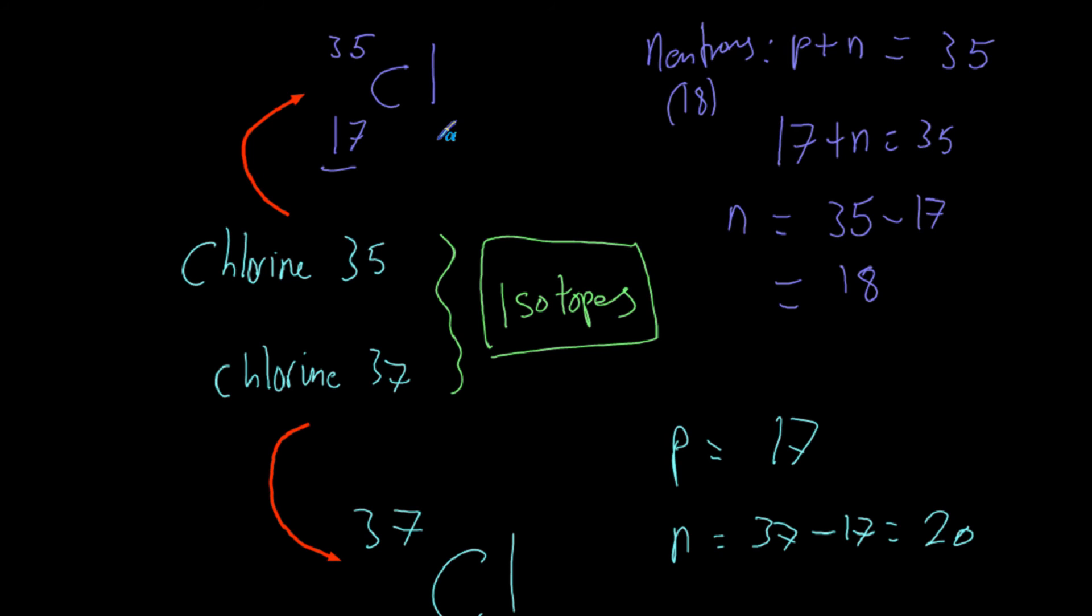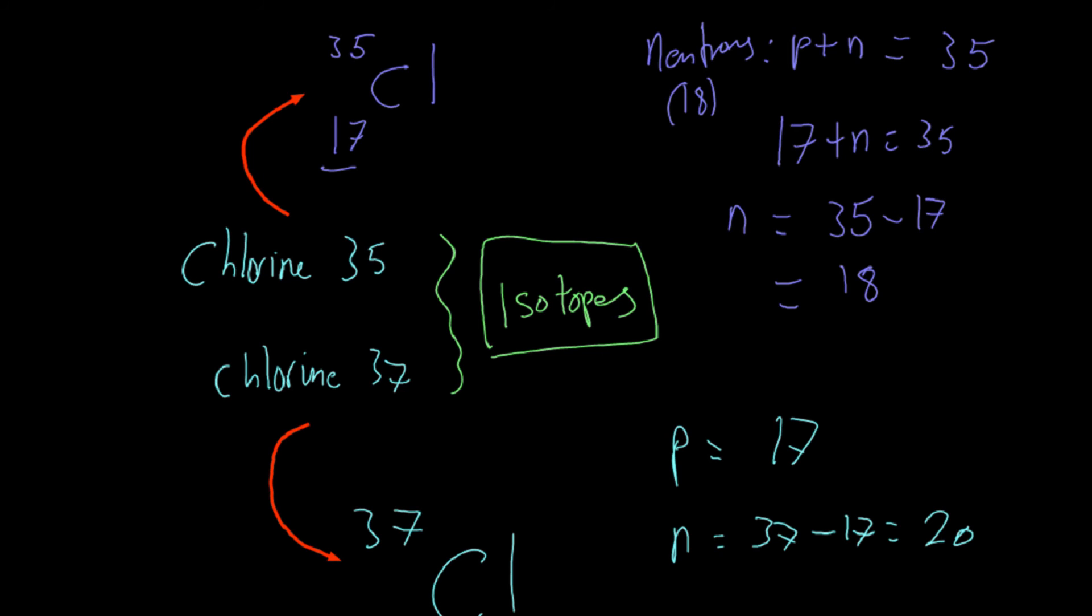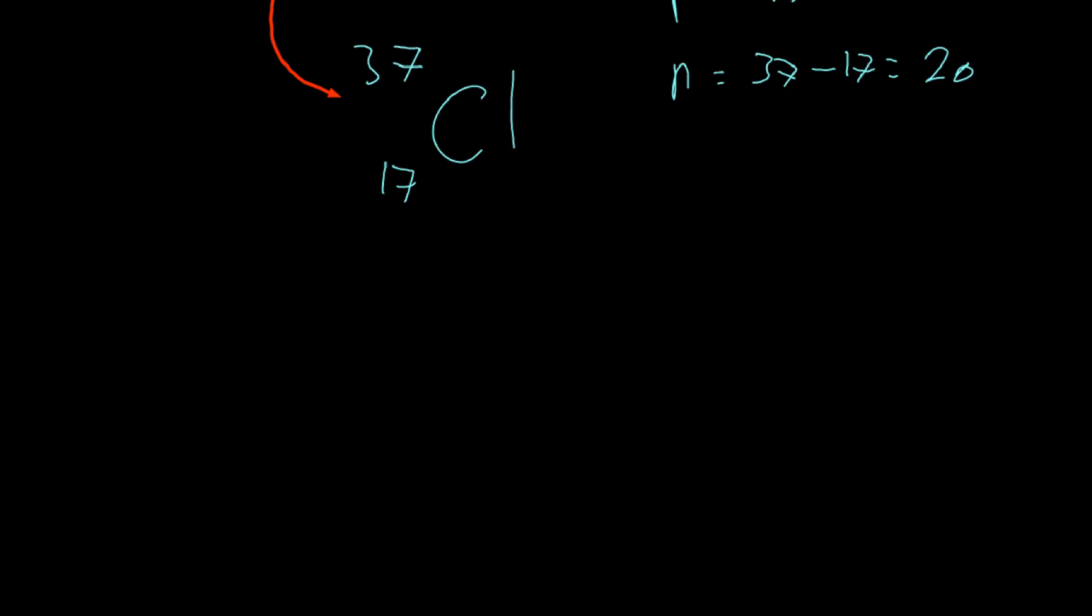So most elements have different isotopes, different versions of the same atom. Some of these do have different properties. For example, the varying amount of neutrons can actually make an atom radioactive. Some atoms aren't radioactive, and some atoms most certainly are. One example of that is carbon 12 is the normal version of carbon that we find, and it's not really radioactive. However, carbon 11 and carbon 14 are both very radioactive, and we use carbon 14 in something known as carbon dating, and because it has a really slow half-life, it means that we can find out the age of certain things by the amount of carbon 14 that is contained in there.